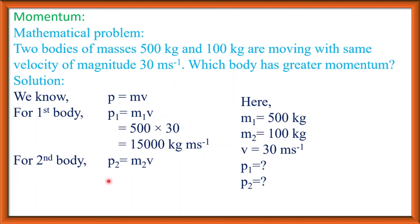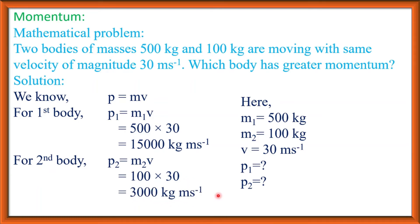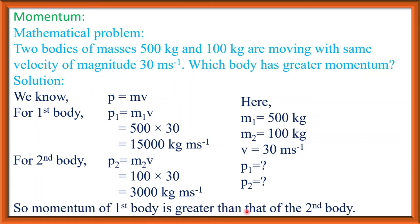For the second body, momentum P2 is equal to M2 into V. M2 is the mass of the second body, and we know M2 is equal to 100 kg. So it will be 100 into 30, and after calculation it is 3,000 kg meter per second. So momentum of the first body is 15,000 kg meter per second and momentum of the second body is 3,000 kg meter per second. We can say momentum of the first body is greater than that of the second body, since the mass of the first body is more. Therefore more the mass, more will be the momentum.